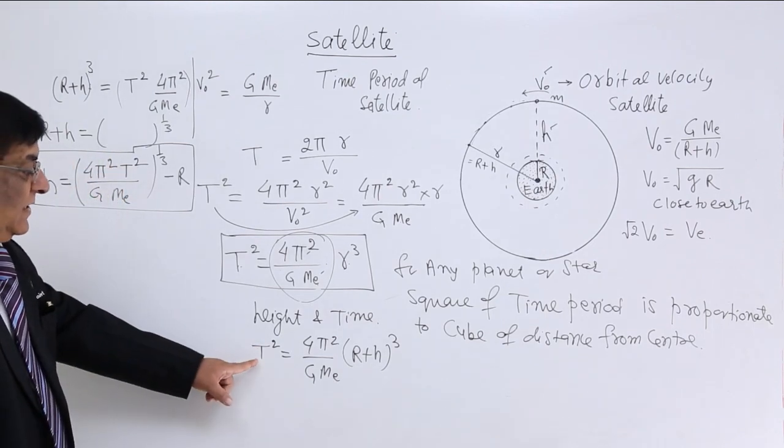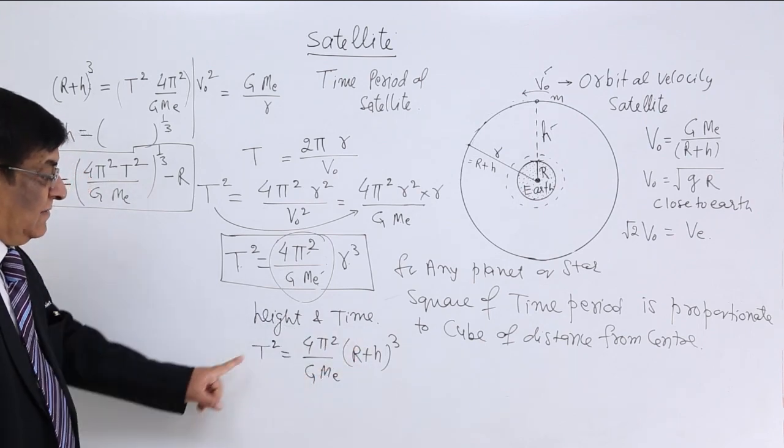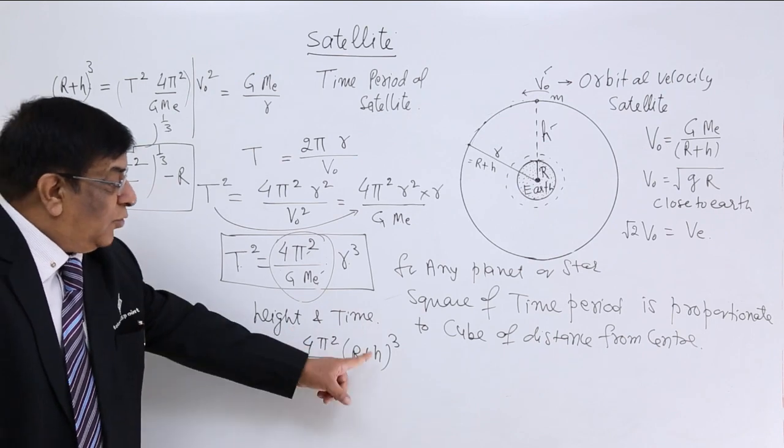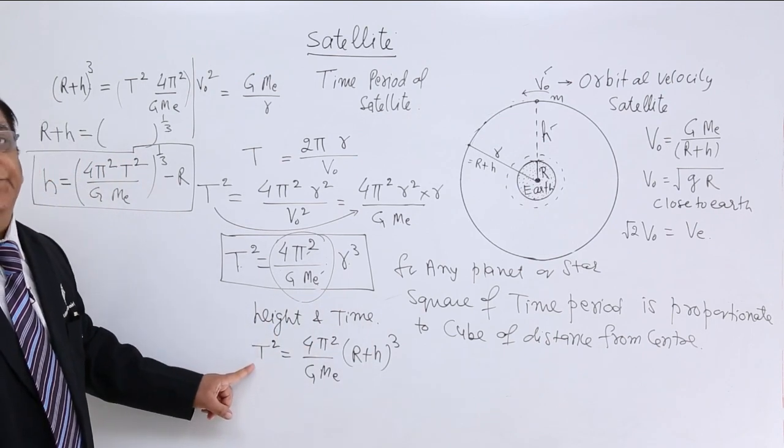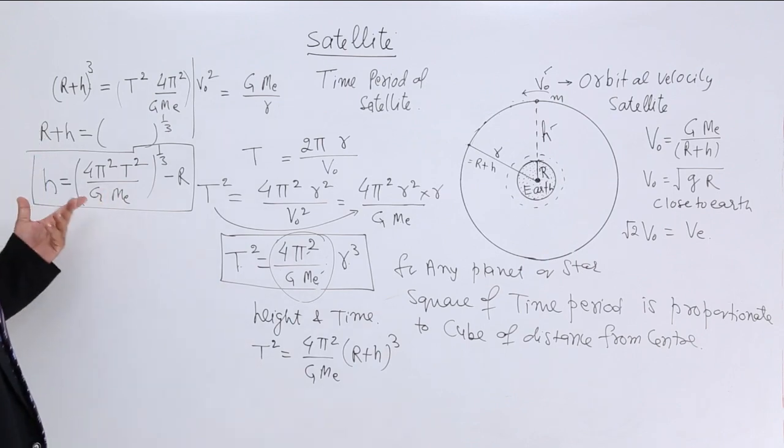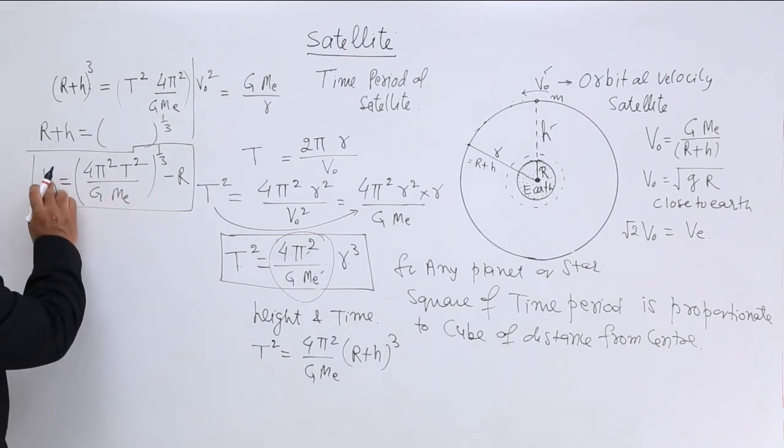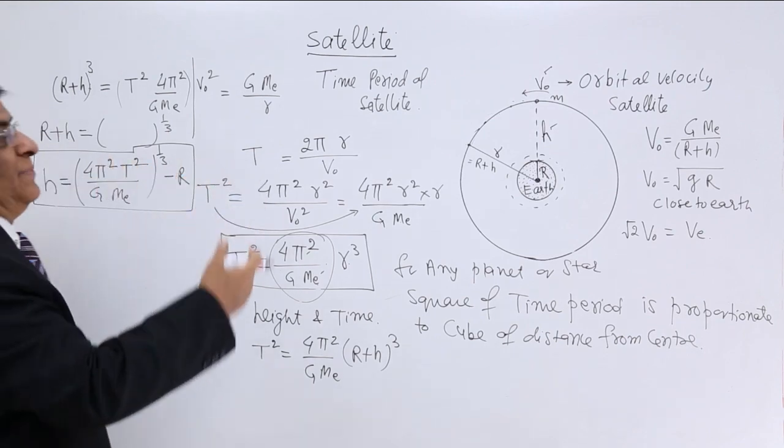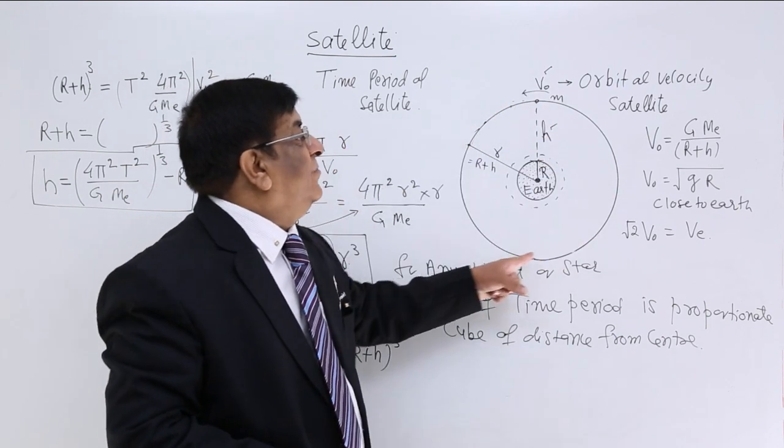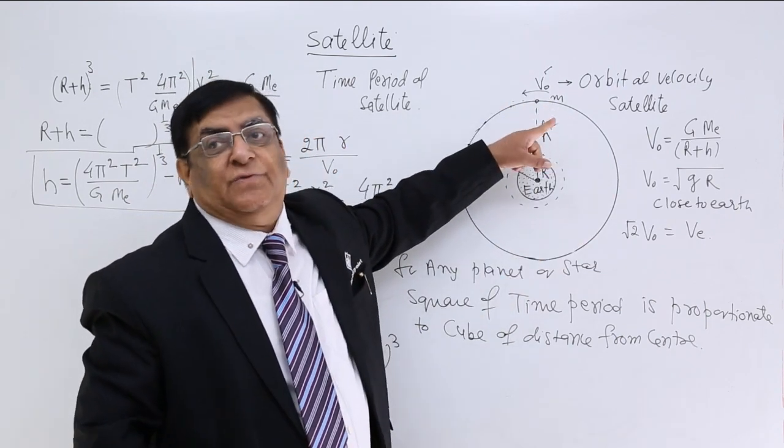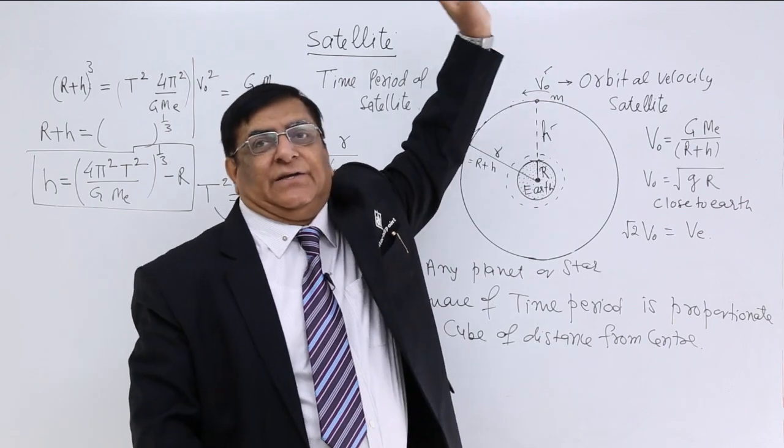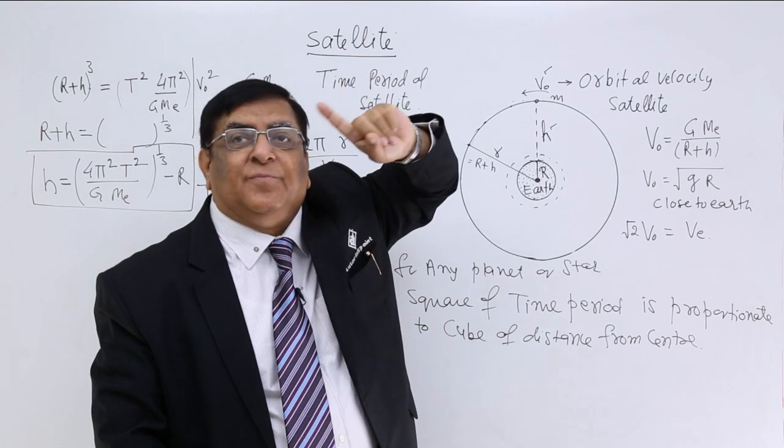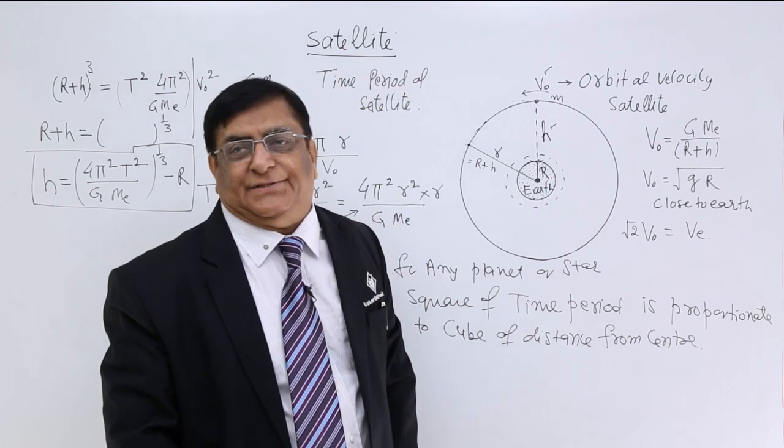This is the relation of time and height. Both are in the numerator. This tells us, more is the height, more is the time of rotation. Here again, same thing, h and t, both are in numerator, so more is the height, more is the time period. So, if we want to increase the time period of a satellite, what should we do? Answer, we must increase its height. When the height goes on increasing, the time period also goes on increasing.